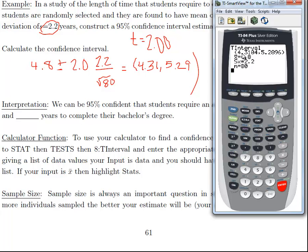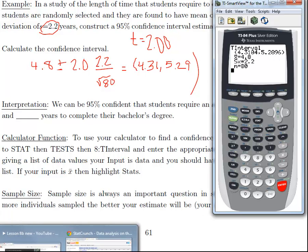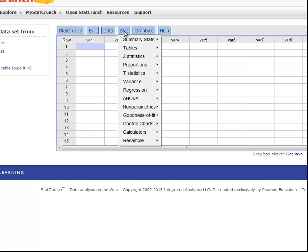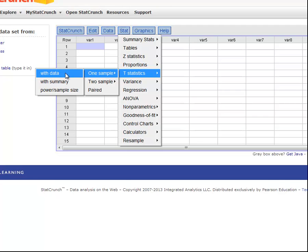Here's my confidence interval: 4.31 up to 5.29, so I got the same answer. If you don't have a calculator, we can do this really easily on StatCrunch. Once you open StatCrunch, these instructions are in your course packet. You can go to stat, then t statistic, one sample with summary.